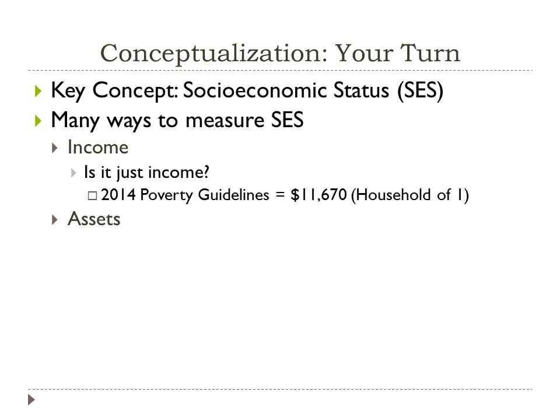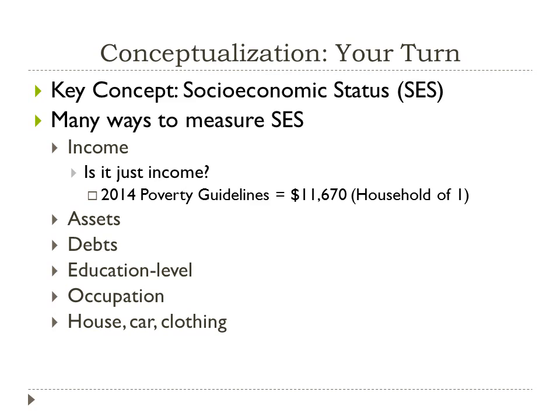Socio-economic status includes many other things: assets you might own, type of debt you have, education level, occupation level, the house you live in, the car you drive, the type of clothing you wear, and the type of language you use. All of these things can make up somebody's socio-economic status. So it's important to conceptualize it and tell other people exactly what you mean — that's the only way people can really replicate your exact way of measurement.